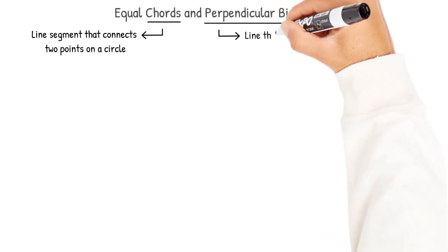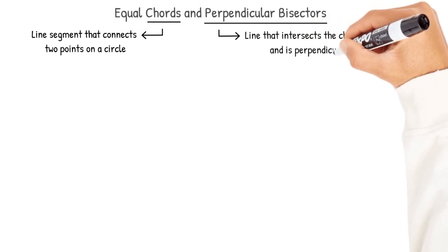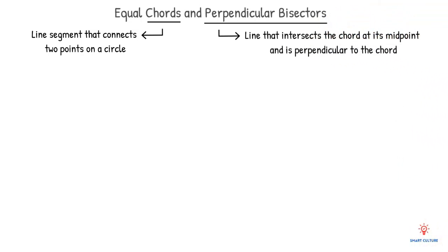This is a line that intersects the chord at its midpoint and is perpendicular to the chord. In other words, it cuts the chord into two equal halves.